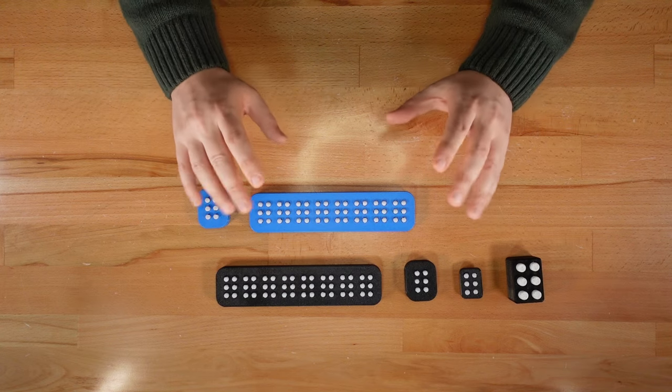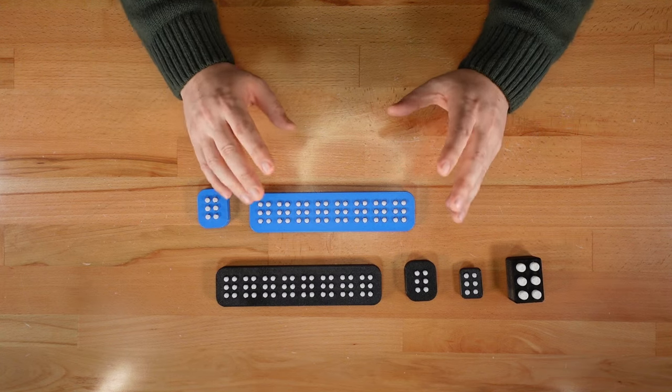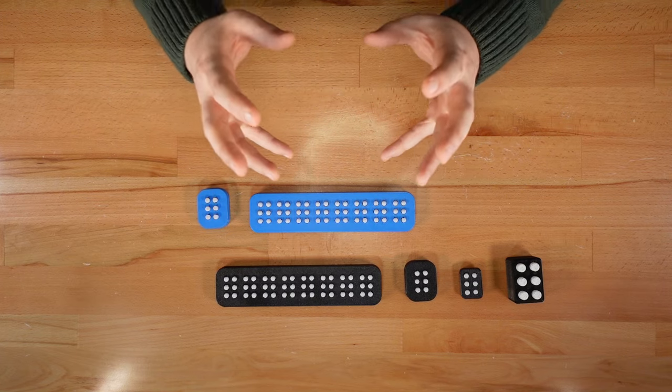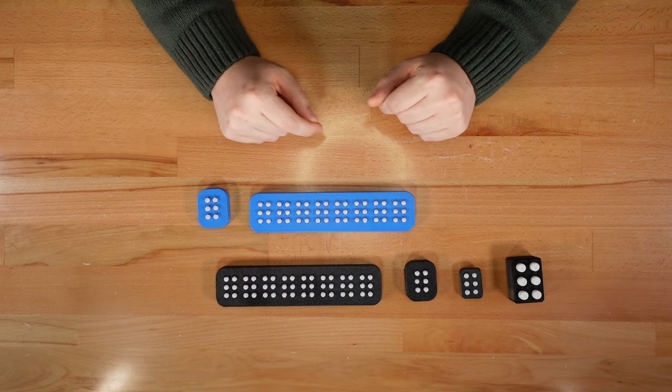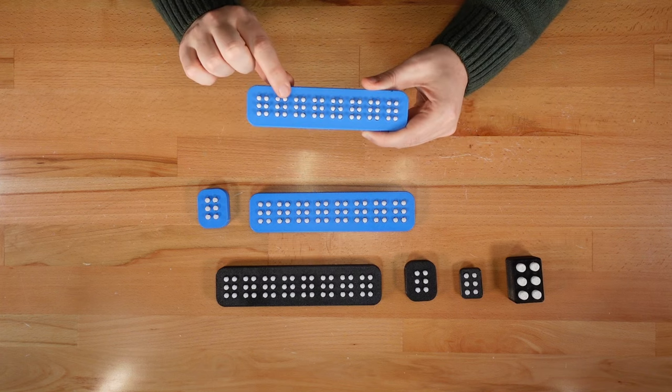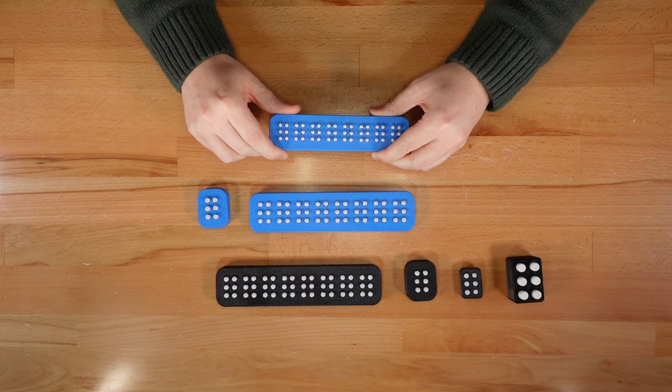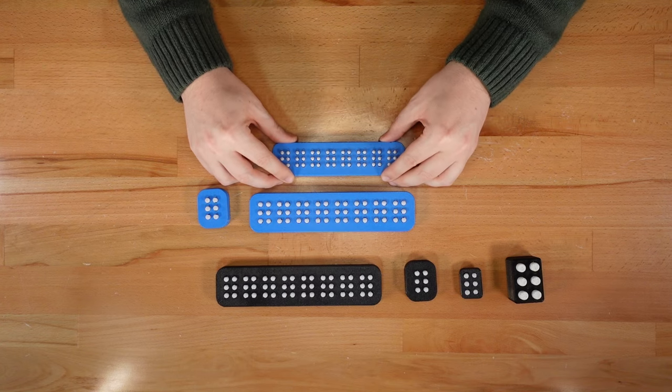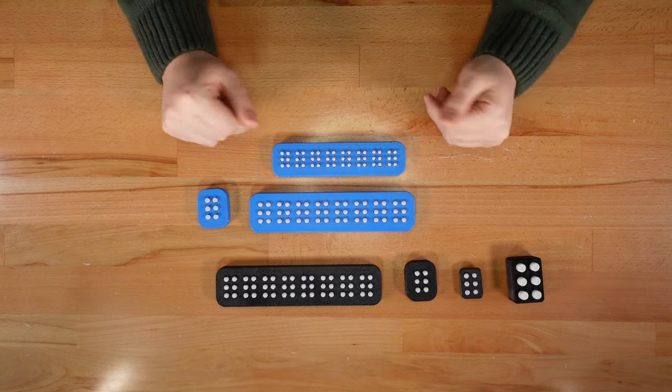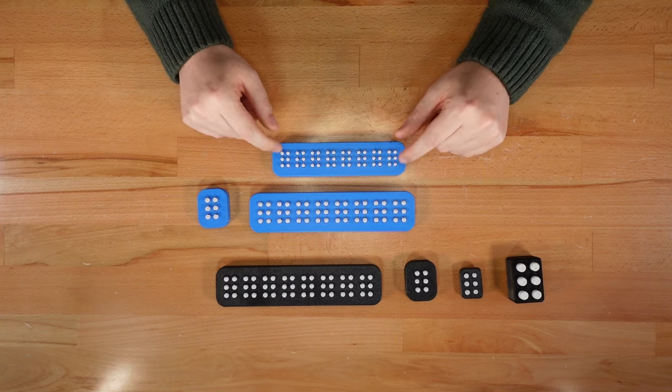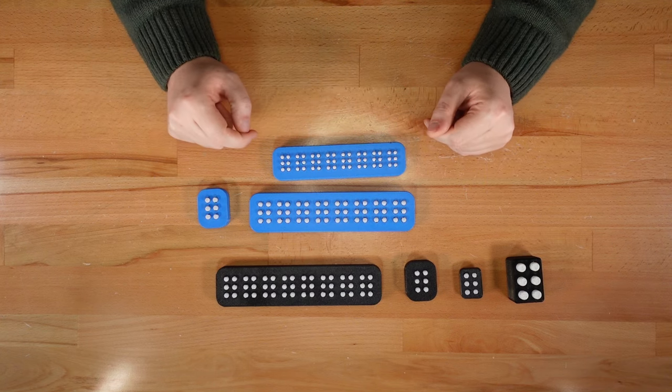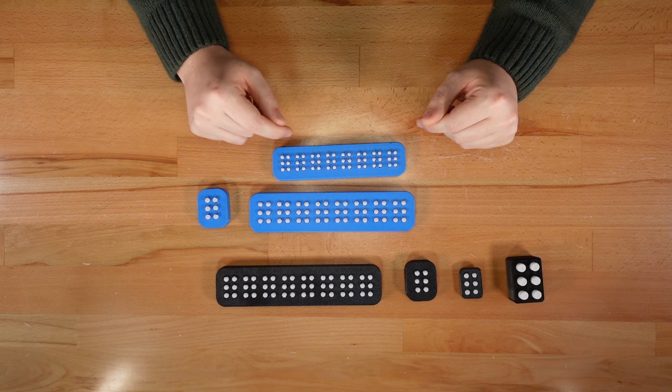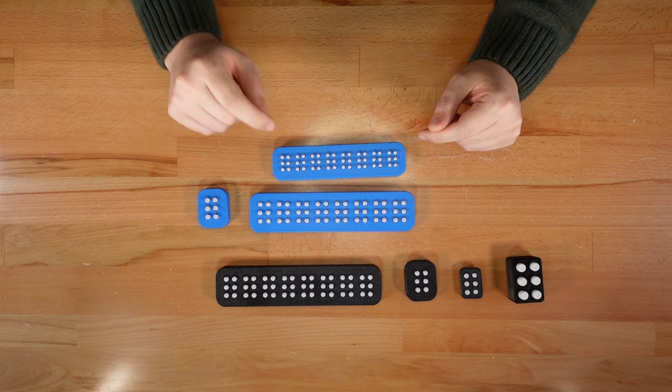In addition to these functional improvements, I have another customization option to share. This simpler mechanism makes it possible to shrink the braille cell down even more. This print has 4.5 millimeter buttons instead of the default 6 millimeter ones. That's another 25% reduction in size. This might be a good option for portability or as a step toward reading smaller braille text. Of course, we might be able to go even smaller, so keep an eye out for future remixes as I continue to work on this design.